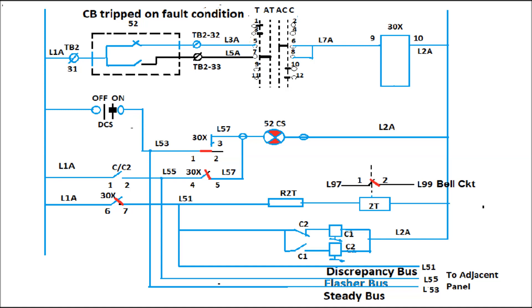The discrepancy circuit after CB tripped has been shown in this figure. As previously CB was closed and CB remained in closed position, due to CB tripped on fault condition, the discrepancy has occurred through auxiliary contact of CB and discrepancy relay. Therefore, discrepancy bus and flasher bus will be energized as shown in this figure.